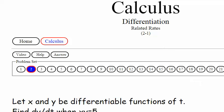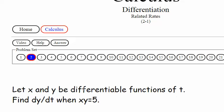2-1. Let x and y be differentiable functions of t. Find dy/dt when x times y is equal to 5.